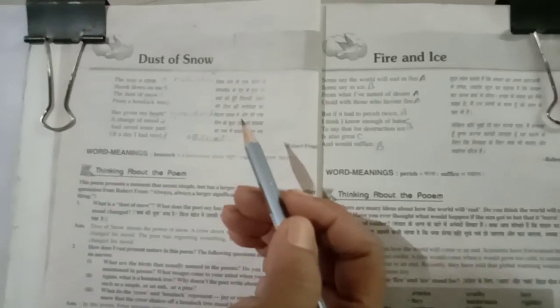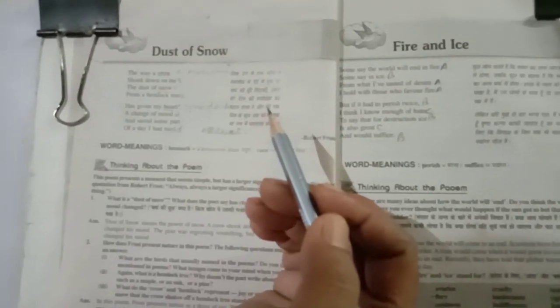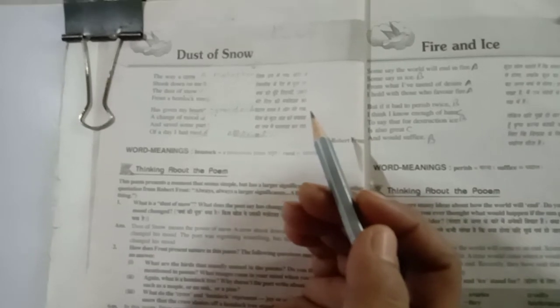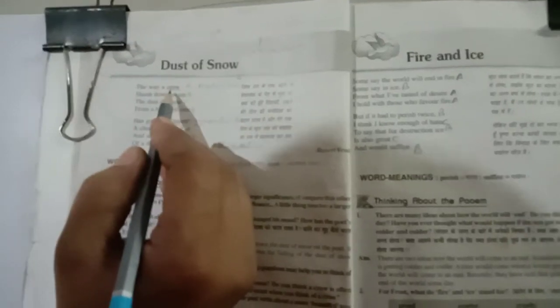Students, now we are going to read this poem line-wise. First of all, note down the difficult words. Way, it means manner. Crow, a bird.